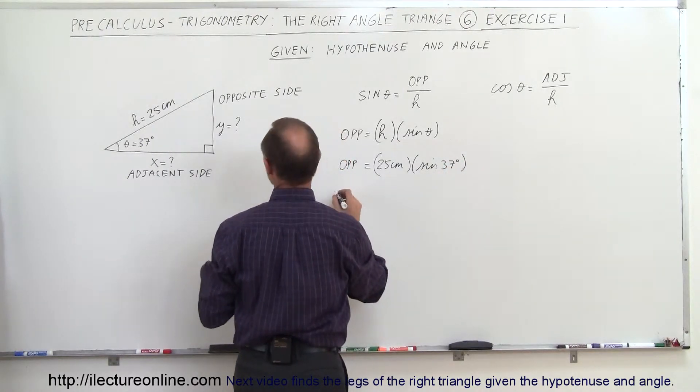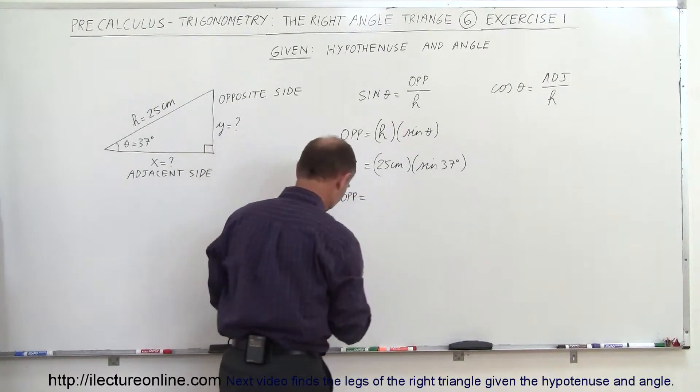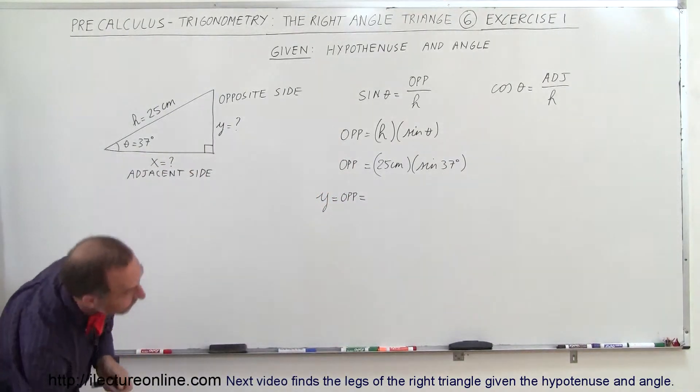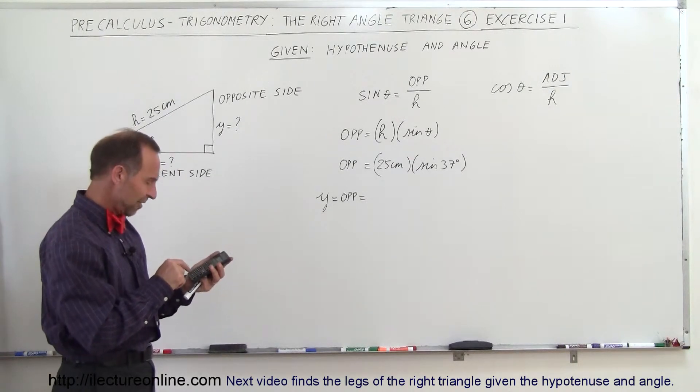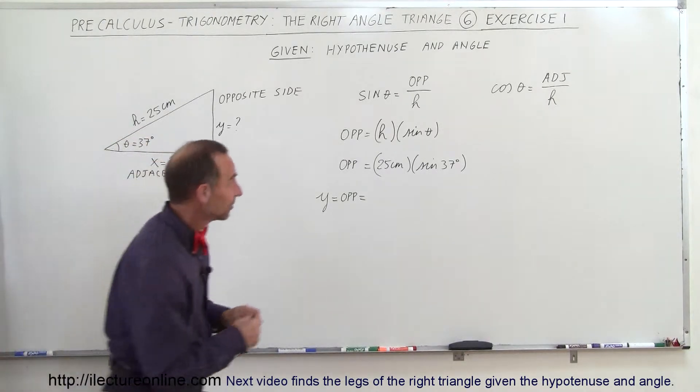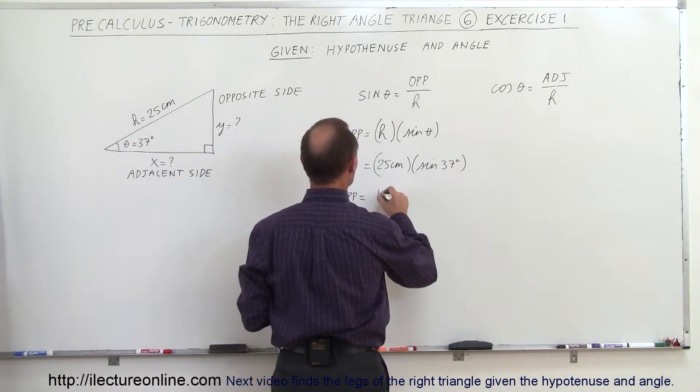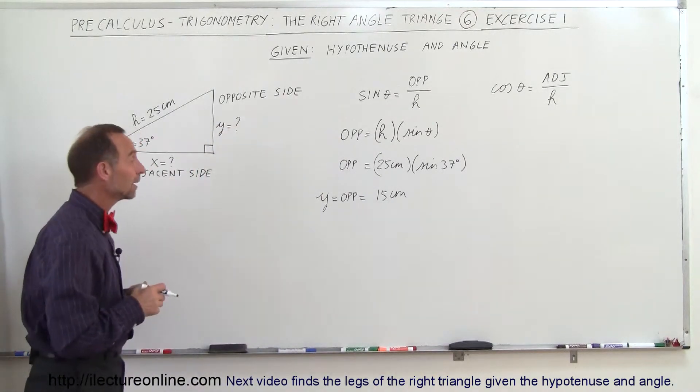And so the opposite side, which is equal to Y. So Y, which is equal to the opposite side, and then of course I need a calculator. So I take 37 degrees, take the sine of that, and multiply that times 25. And I find it's 15 centimeters. So this is 15 centimeters for Y, or the opposite side.